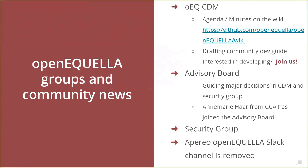We are currently working on drafting a community developer guide. Anyone can fork the OpenAquella repo, make changes, and open a pull request — that's the beauty of open source software. For people that have the rights to merge code into the codebase, we want to make sure they've been vetted by the community — folks that regularly attend the community developer meetings — and then approved by the advisory board. We're working on those guidelines so folks are aware of what it takes to merge code into the primary codebase.